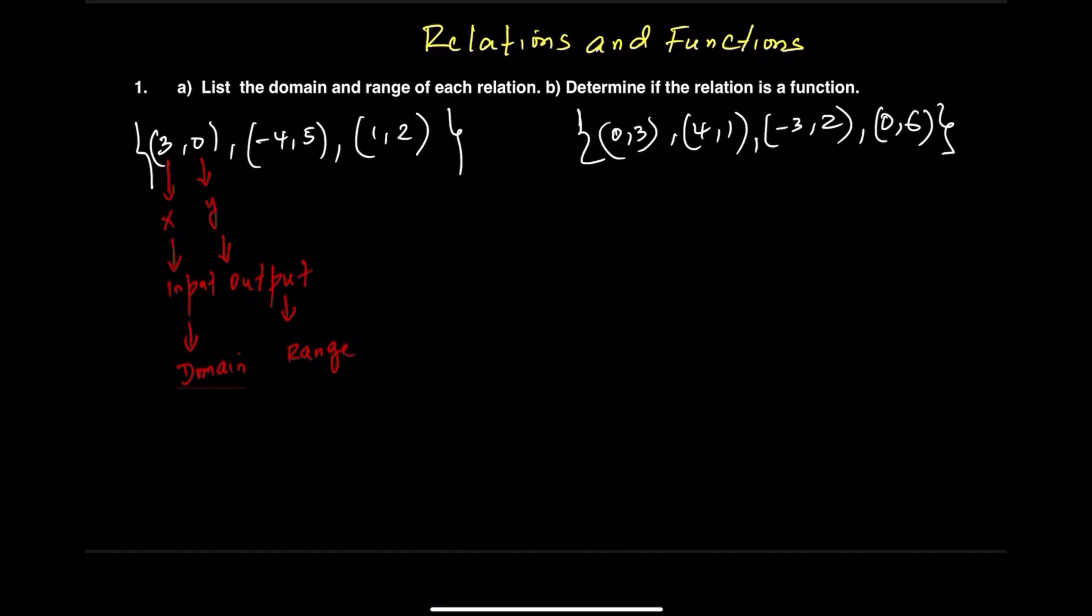Step 1: Identifying the domain and range. Let's take a look at the first relation. We'll start with the domain, which includes all the X values. Listing them in increasing order: negative 4, 1, and 3. Now for the range, we'll list all the Y values: 0, 2, and 5.